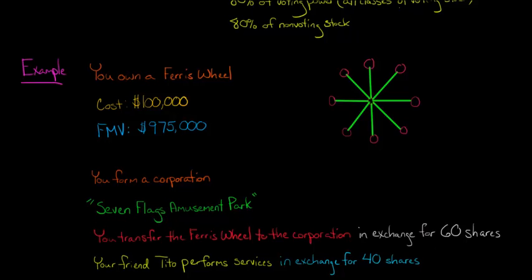And let's just assume that also your friend Tito is providing some services, maybe Tito is a lawyer or an accountant, and he says, you know what, I'll provide these services in exchange for 40 shares. So in total, let's just say this is a startup company, and so in total there are 100 shares of stock of this Seven Flags Amusement Park. So you own 60 shares, and your friend Tito owns 40 shares. But Tito didn't transfer any property, he performs services in exchange for those shares.